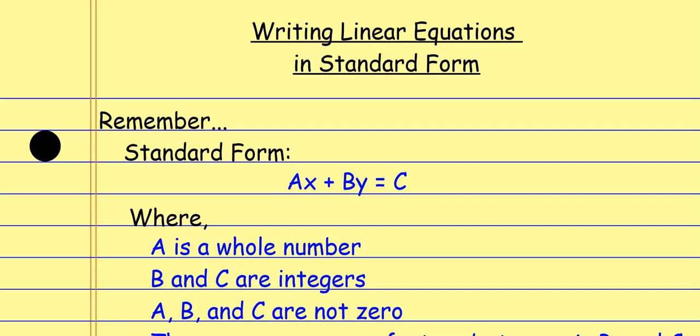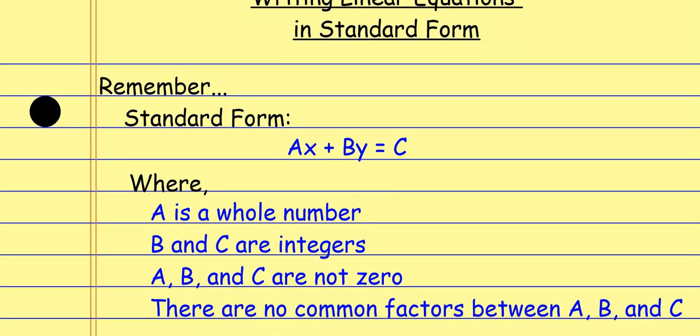There are a bunch of little stipulations, but we'll take care of these as we go. If you have the order right — x, y equals, and then the number — the rest is not super important. Some of this will take care of itself. It says a is a whole number, b and c are integers, a, b, and c are not zero, and there are no common factors between them. Really, the reason for this is you're not supposed to have any fractions, so no fractions. And a is not supposed to be negative, so no negative for x.